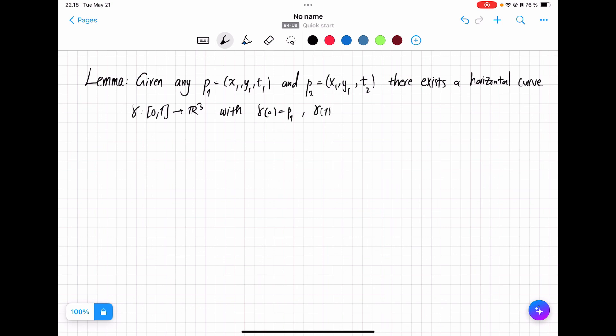gamma of 1 equal to P2, and most importantly, the length of gamma finite. We will actually find a better bound on this length, but let's see where this comes from.